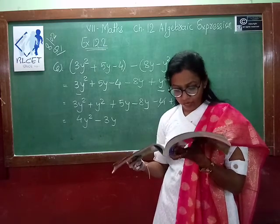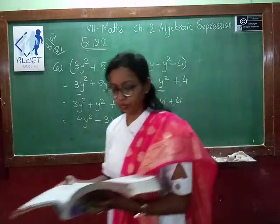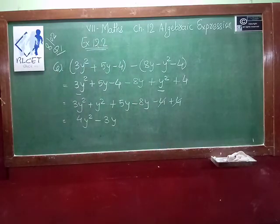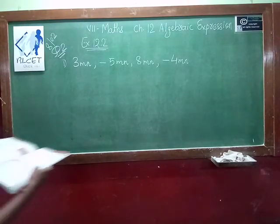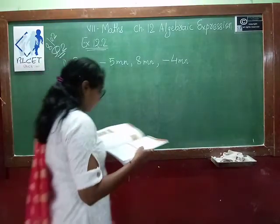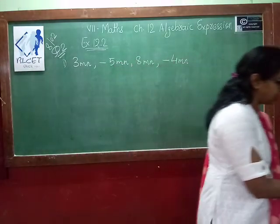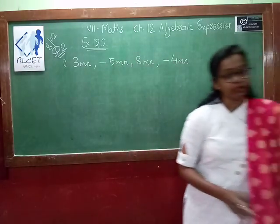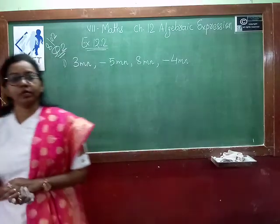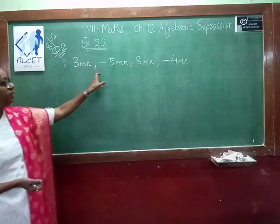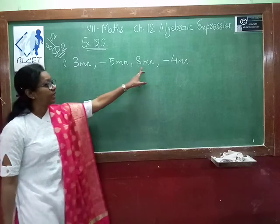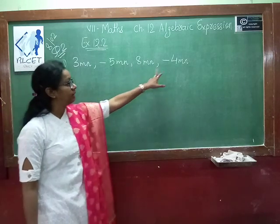Now we move on to question number 2. See the first sub-question. The question is: 3mn, minus 5mn, 8mn, minus 4mn — we need to add these.